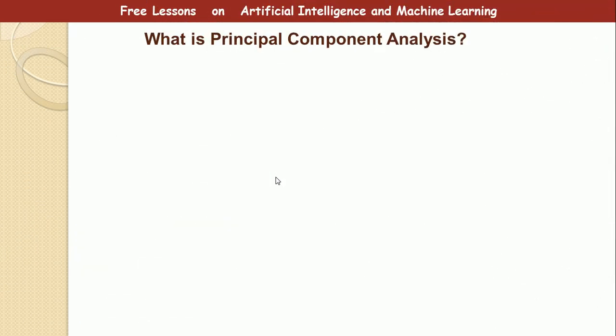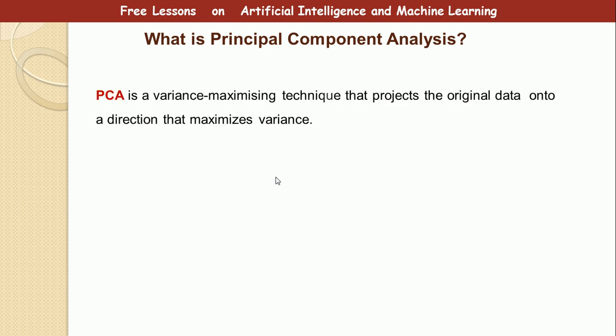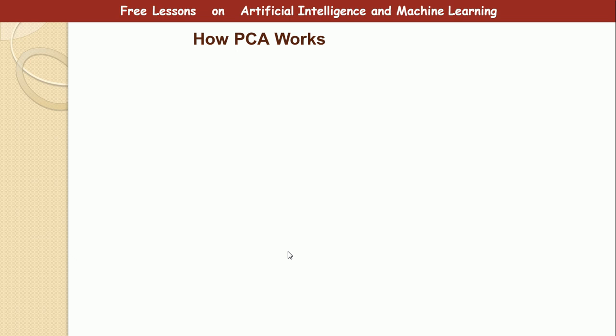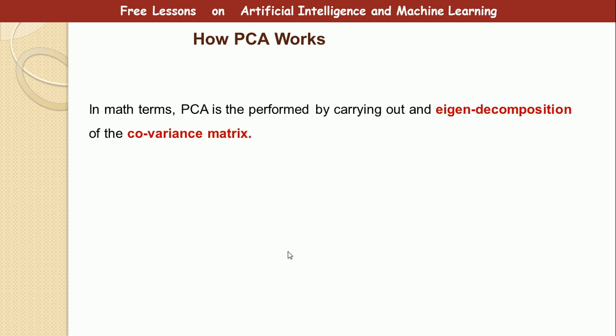So what is principal component analysis? PCA is a variance-maximizing technique that projects the original data onto a direction that maximizes variance. It determines the features of the data that have the most effect on the dataset. It performs a linear mapping of the original data to a lower-dimensional space so that the variance in the lower-dimensional representation is maximized. Let's now see how PCA works in theory.